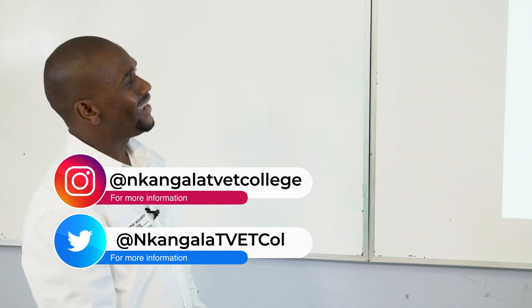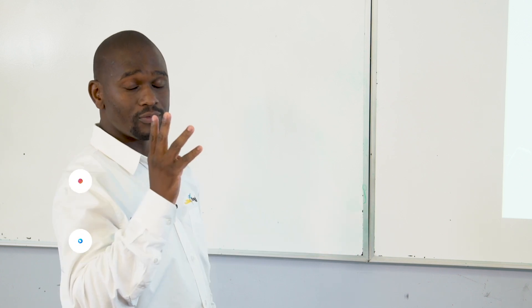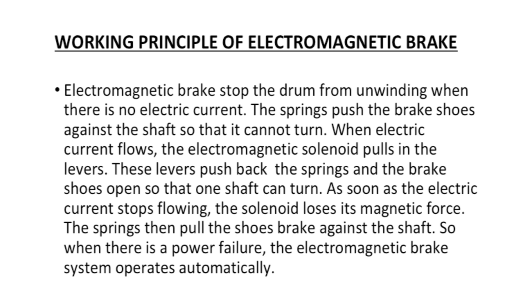Working principle of electromagnetic brakes: electromagnetic brakes stop the drum from unwinding when there is no electric current. The spring pushes the brake shoes against the shaft so that it cannot turn. When electric current flows, the electromagnetic solenoid pulls in the levers. These levers push back the spring and the brake shoes open so that the shaft can turn. As soon as the electric current stops flowing, the solenoid loses its magnetic force and the spring pulls the shoes back against the shaft. When there is a power failure, the electromagnetic brake system operates automatically.